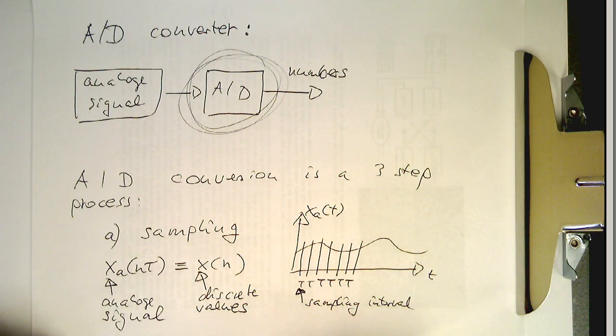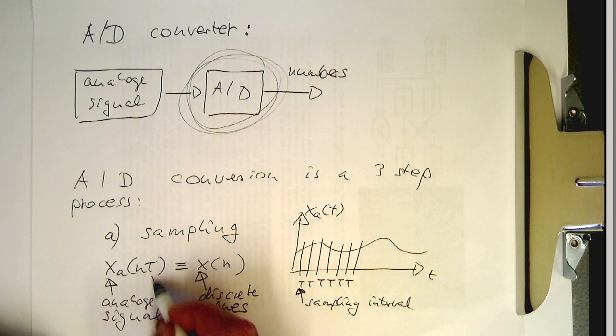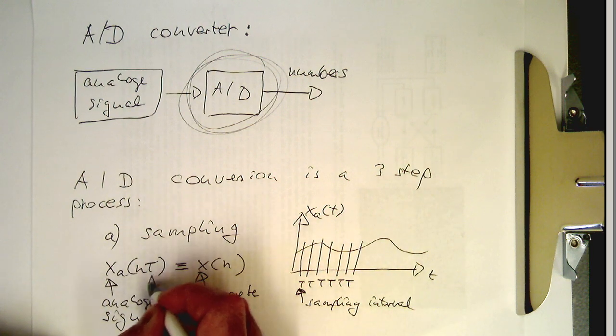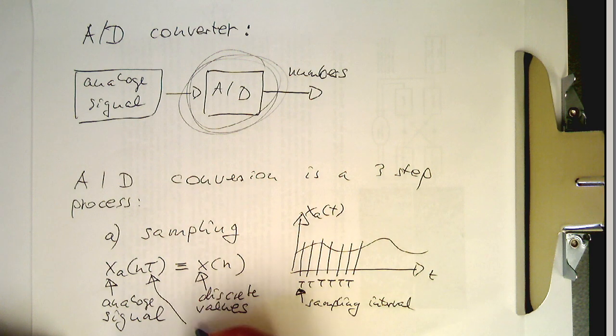And this T defines also our sampling rate here, and the sampling rate is obviously then the one over T. So F is one over T, and that's our sampling rate.